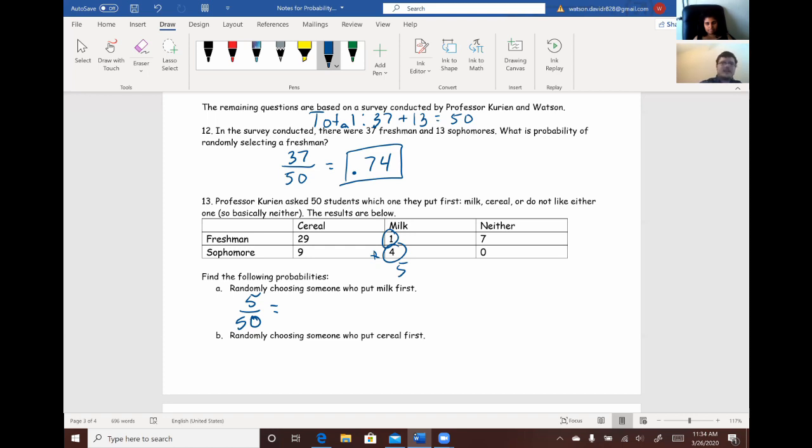So, we can reduce the fraction. Just be 1 over 10. And then we can also just convert that to a decimal, which would be 0.1. So, for B, find the probability of randomly choosing someone who put cereal first. So, we're going to do the same thing except for with cereal this time.